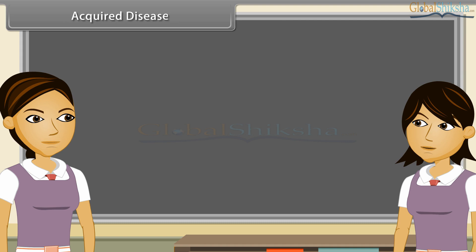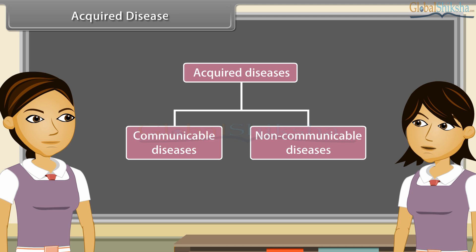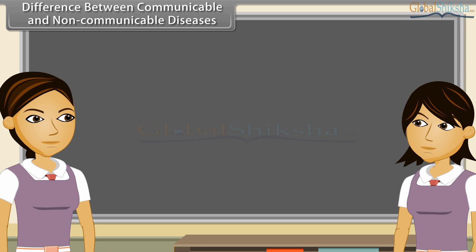Acquired diseases occur only after birth and hence they are non-inherited. Acquired diseases are of two types: communicable diseases and non-communicable diseases — for example, influenza.